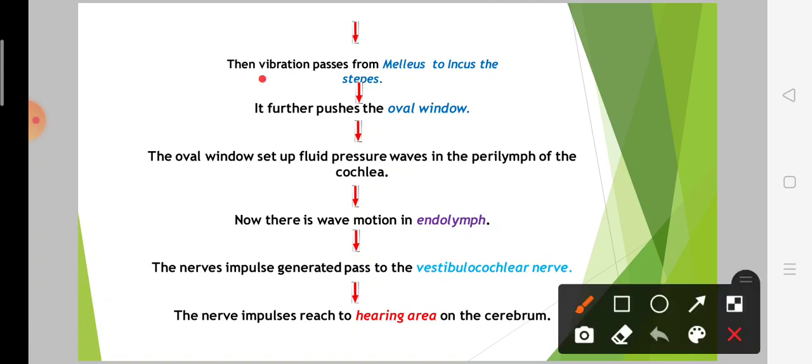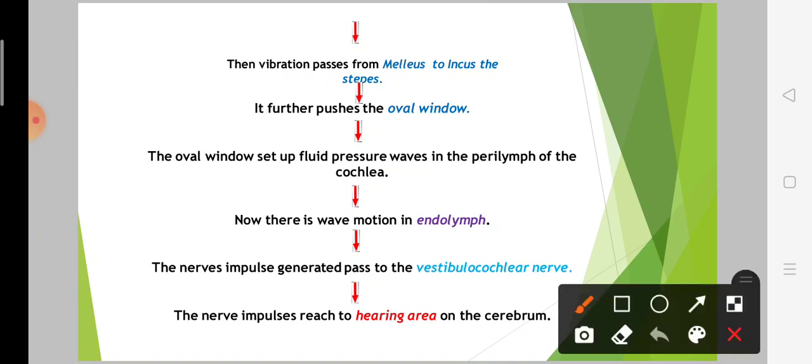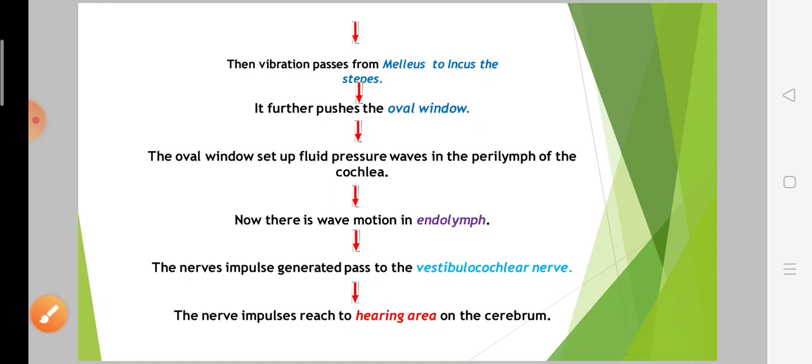Then the vibration of malleus, incus, and stapes causes the sound waves to reach the oval window. Then the oval window sets up fluid pressure waves in the perilymph of the cochlea.